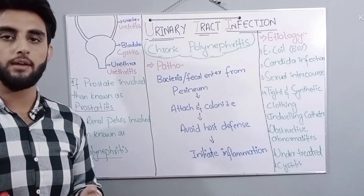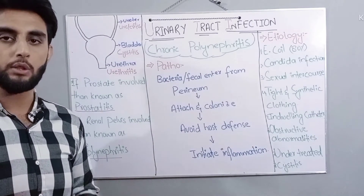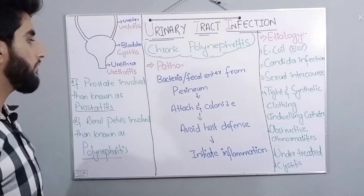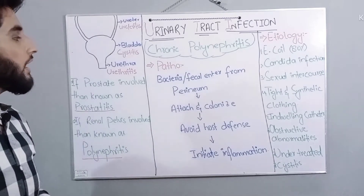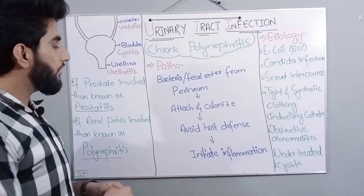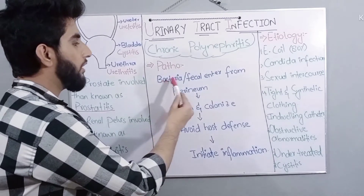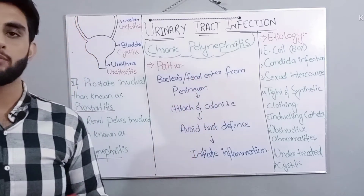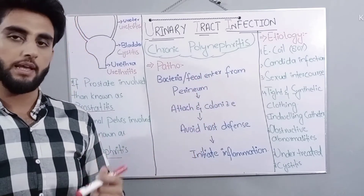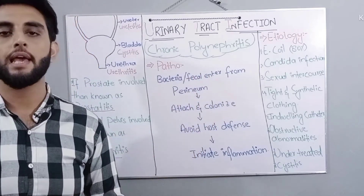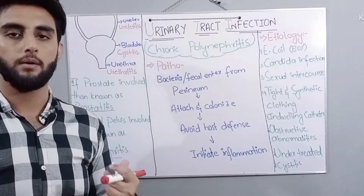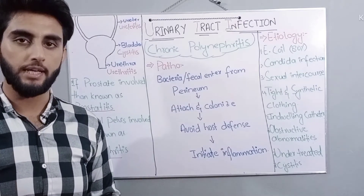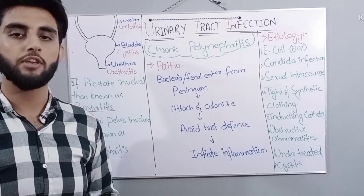Now we will see the pathophysiology — what is the pathway that bacteria or infection will follow. First of all, bacteria or any fecal material enters from the perineum, which has an opening of the urethra. Any bacteria or fecal material that enters the urinary tract attaches to the epithelium there.